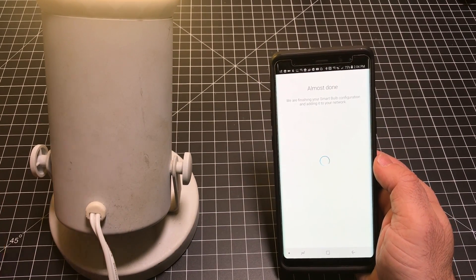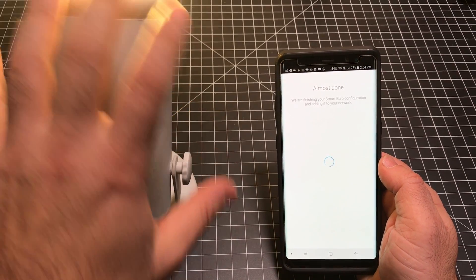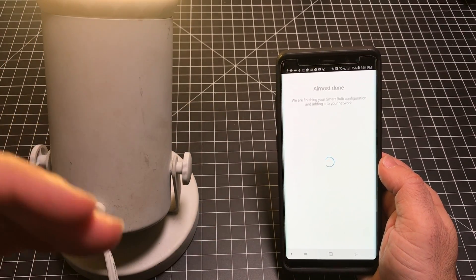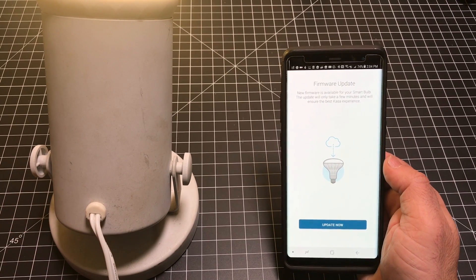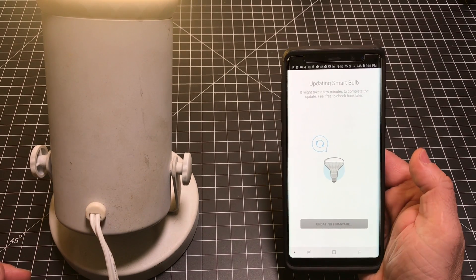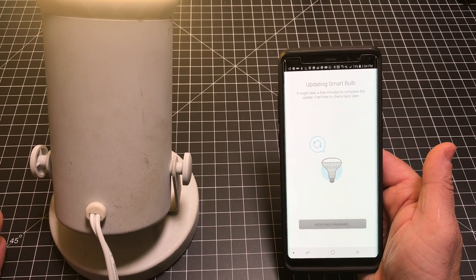Now, once it's configured, what you're going to see is the bulb is going to cycle. It's going to go through a couple of colors, just cycling through, just indicating that it's connected. I'm going to go through a firmware update, just because there's one available. And then we'll see how everything works.